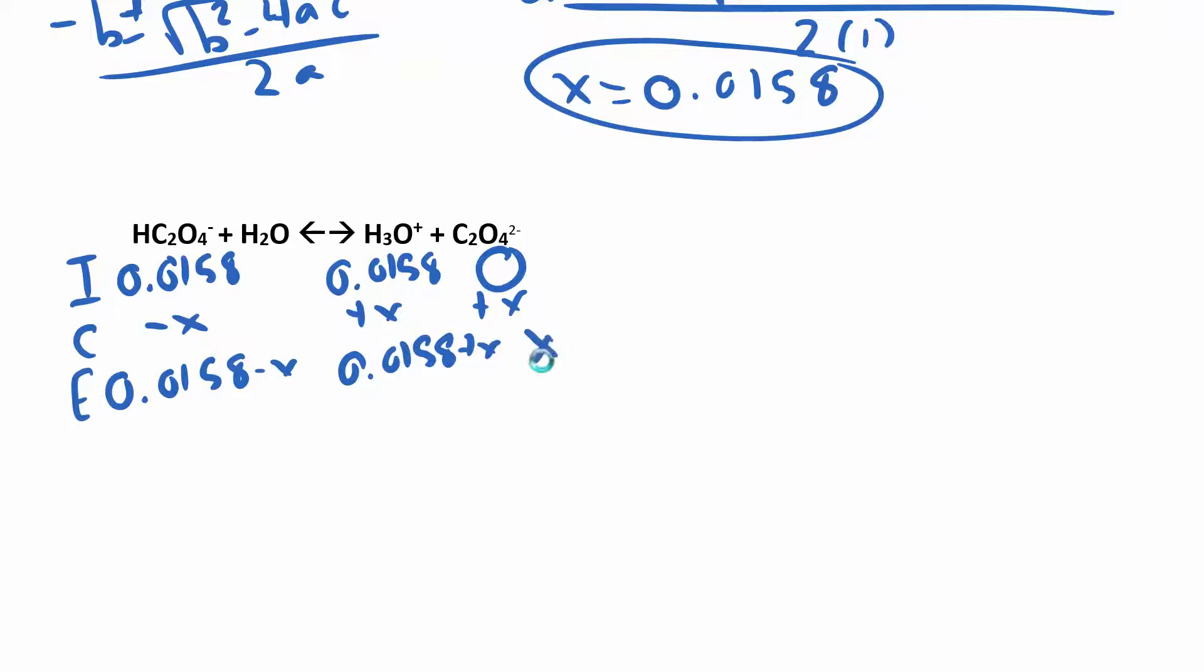It's really important that you already have some hydronium in your system. So keep it in there, make sure that you have an initial concentration of hydronium 0.0158 minus x, 0.0158 plus x, and x. Now we can plug that into Ka2, which is the products over reactants again: x times 0.0158 plus x over 0.0158 minus x.